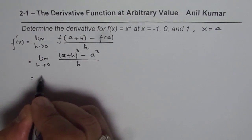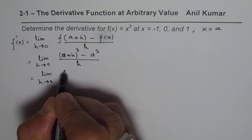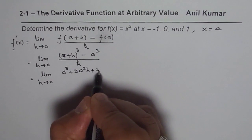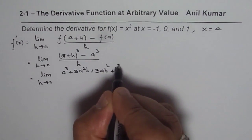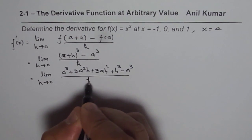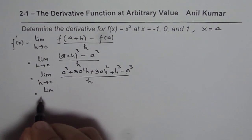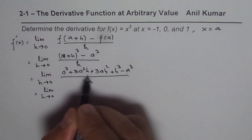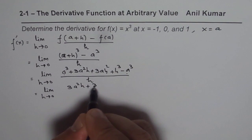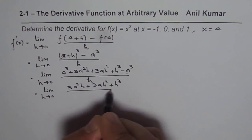So we can simplify by expanding (a+h)³. The a³ terms cancel out, and we get all the terms where h is common: (3a²h + 3ah² + h³)/h.